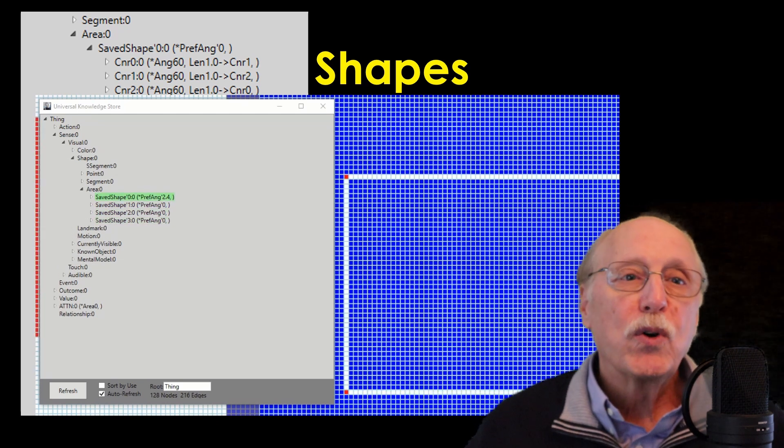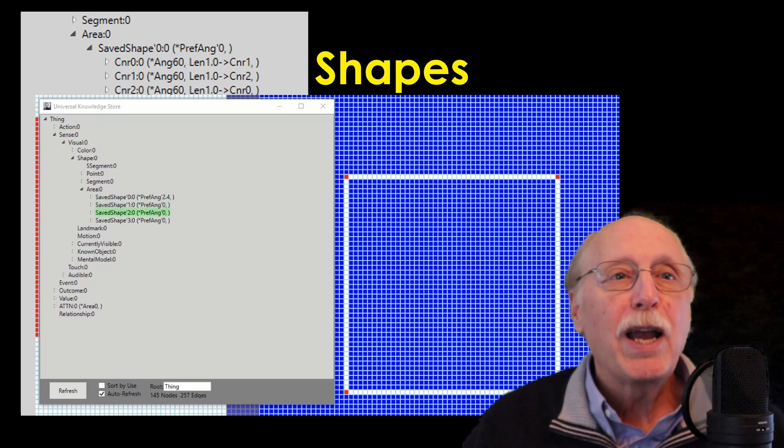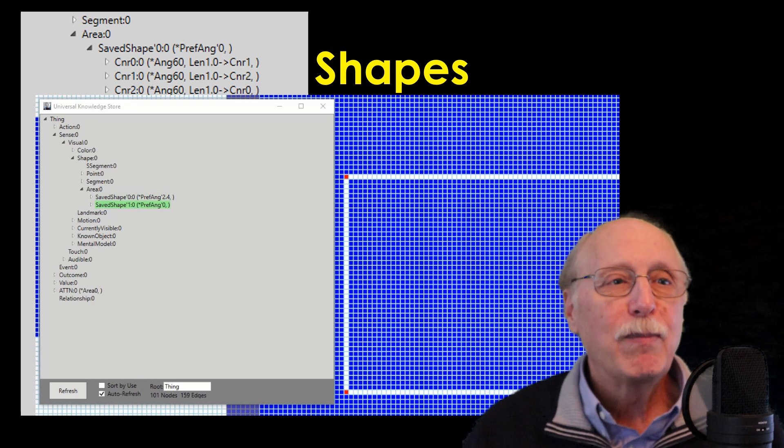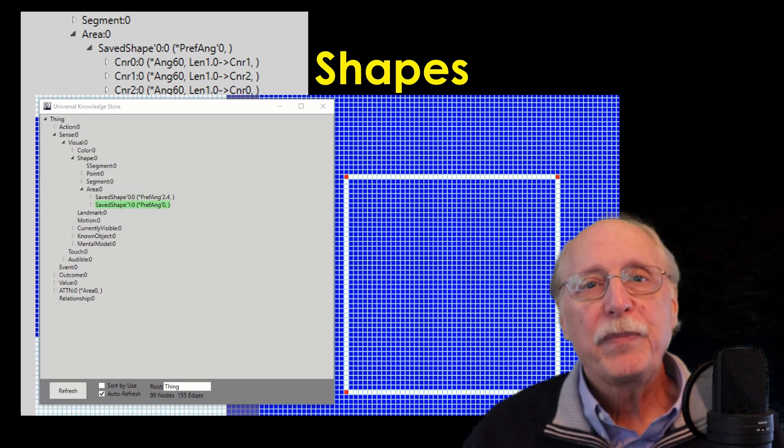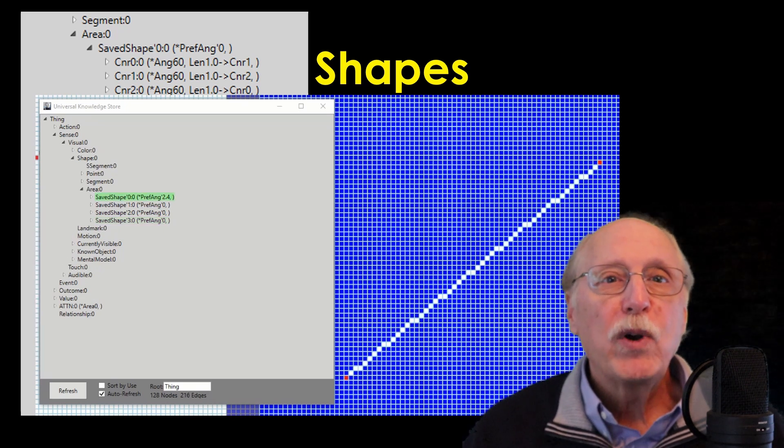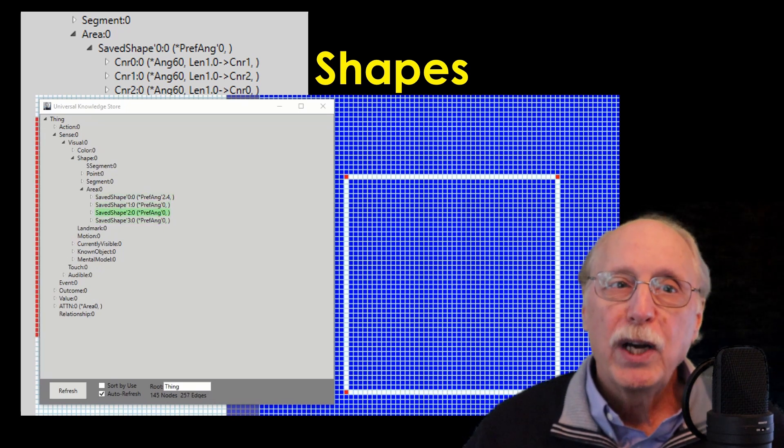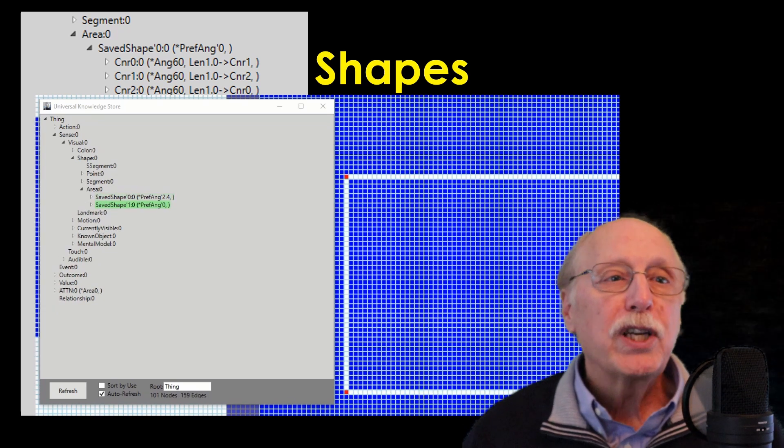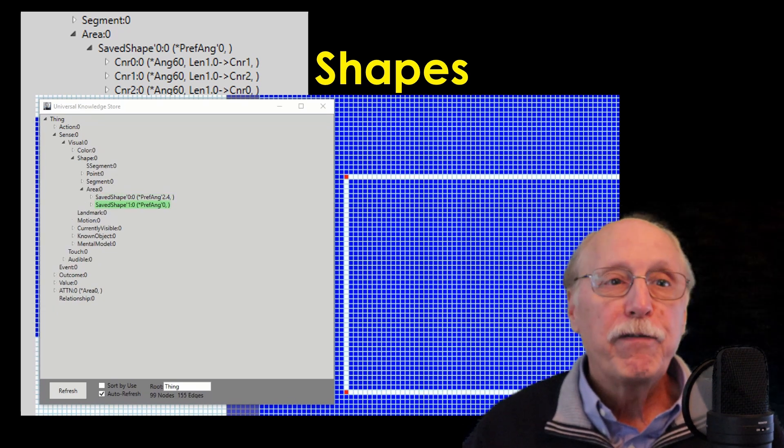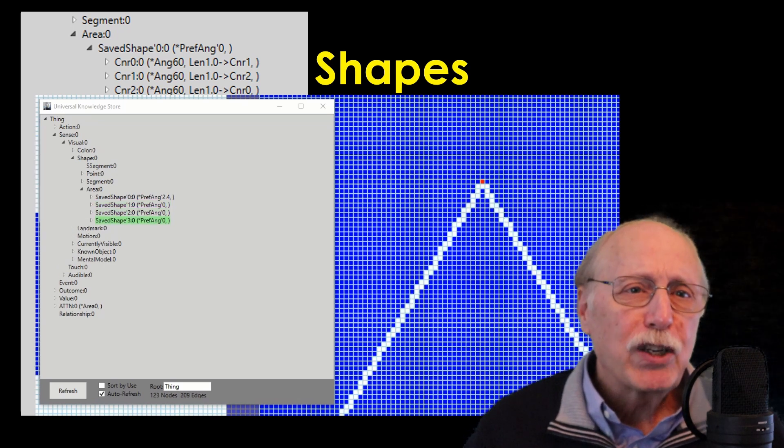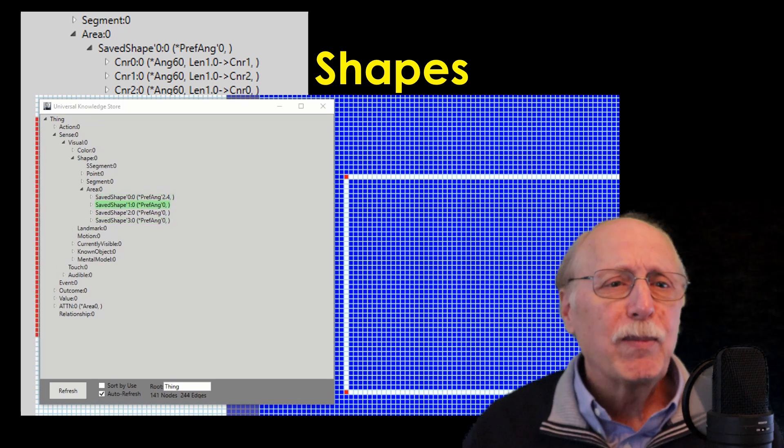This step scores each area against its library of known shapes, and if there is no good match, a new shape is added to the library. This step also shows another way the UKS relates to neurons. You can see that when a shape is recognized, the node representing that abstract shape fires. The system has no idea what the shapes actually are, so it gives them arbitrary labels.